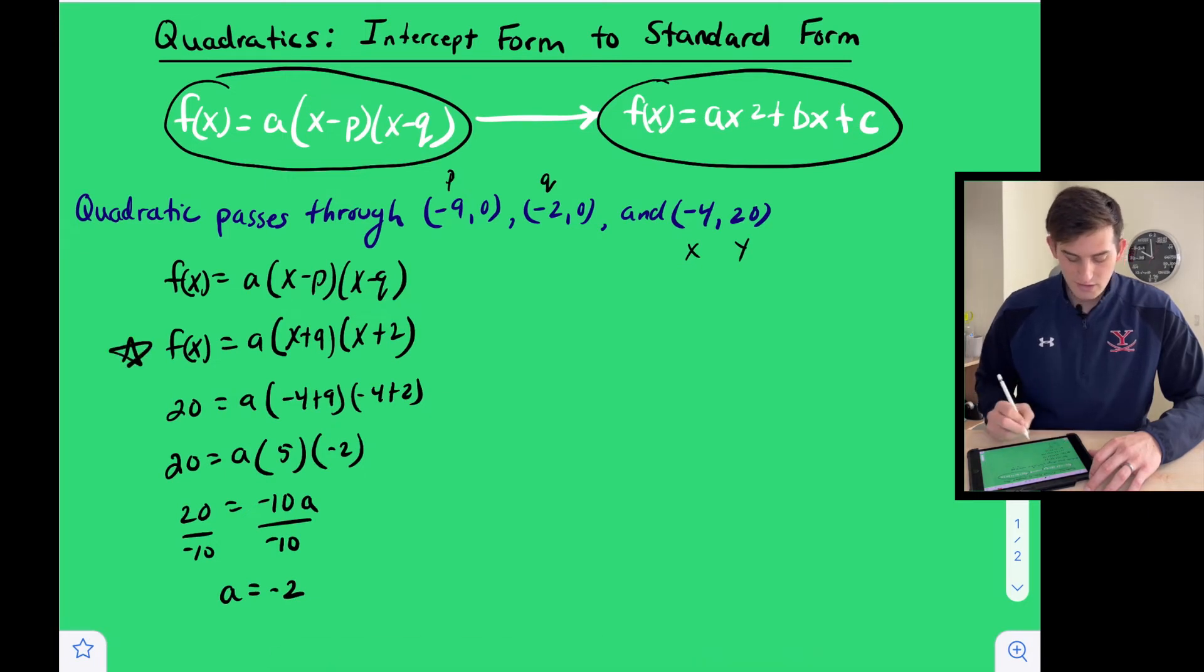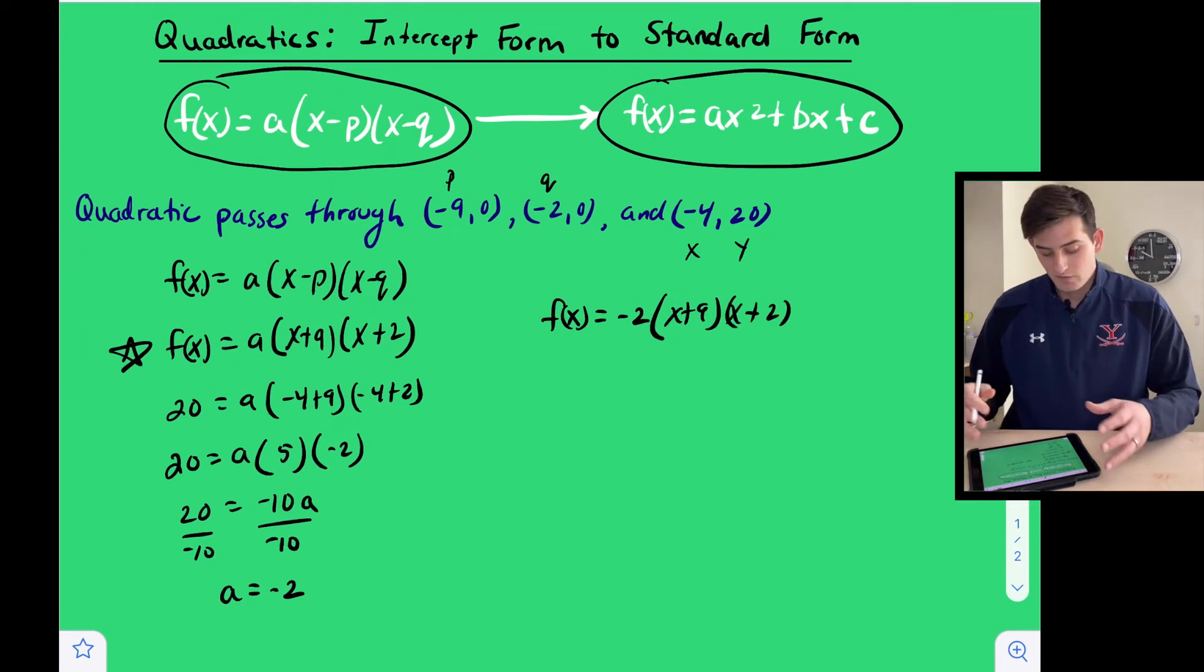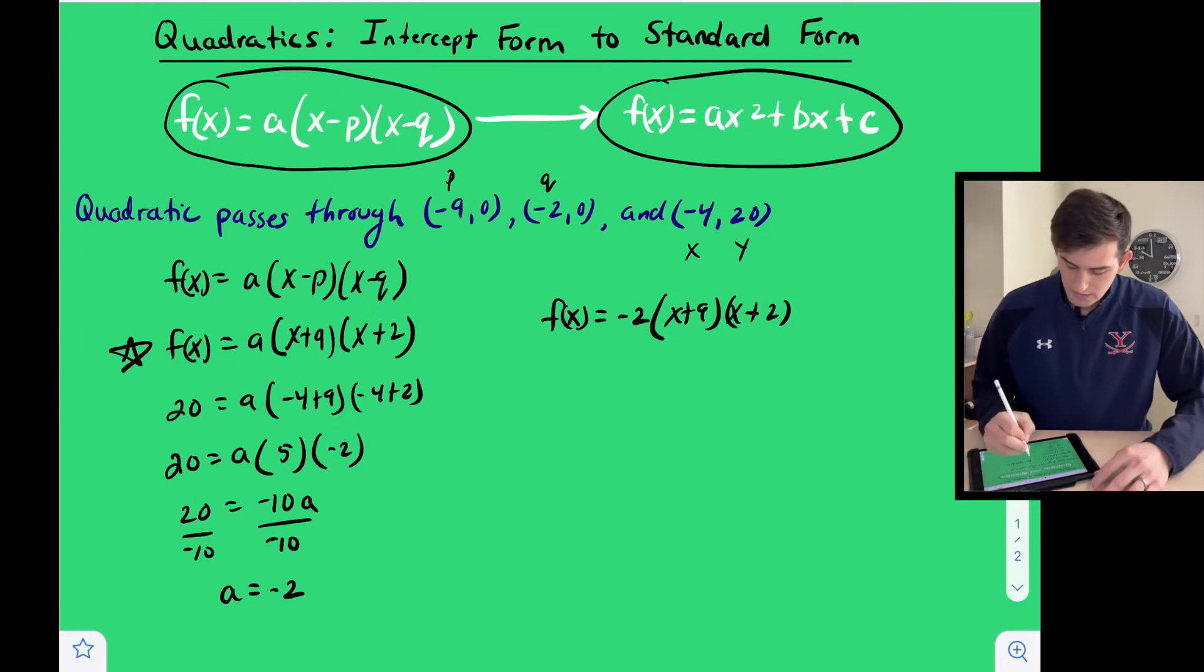So now we can go back to this equation right here. And we can say f of x equals negative two times x plus nine times x plus two. Now to simplify this, let's foil our two binomials, and then we can distribute the negative two at the end.